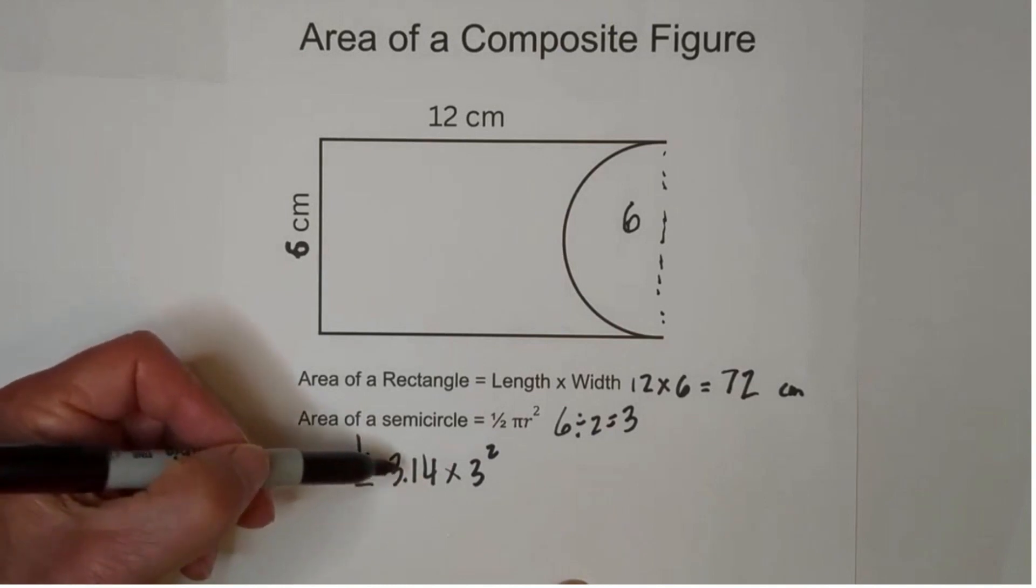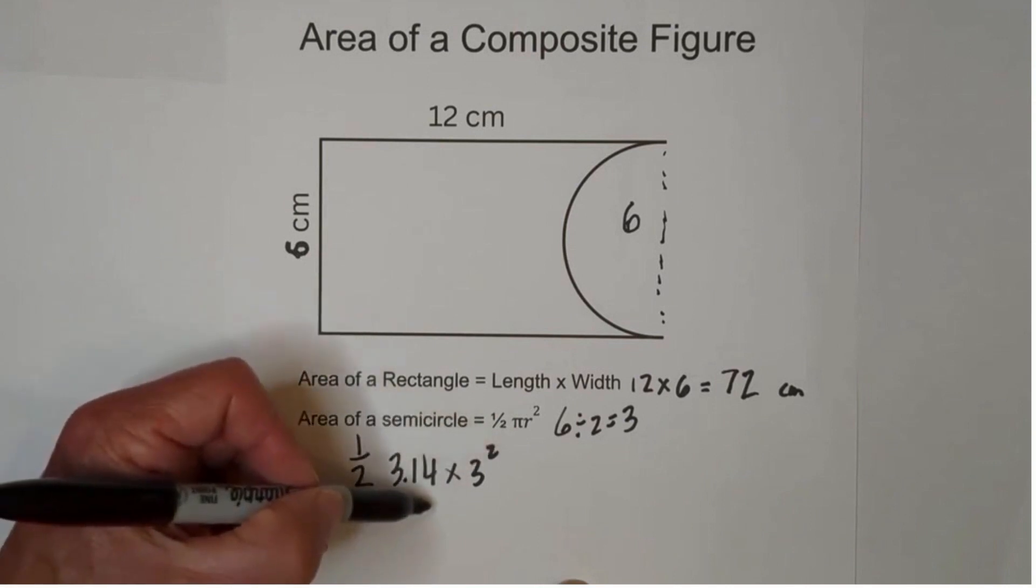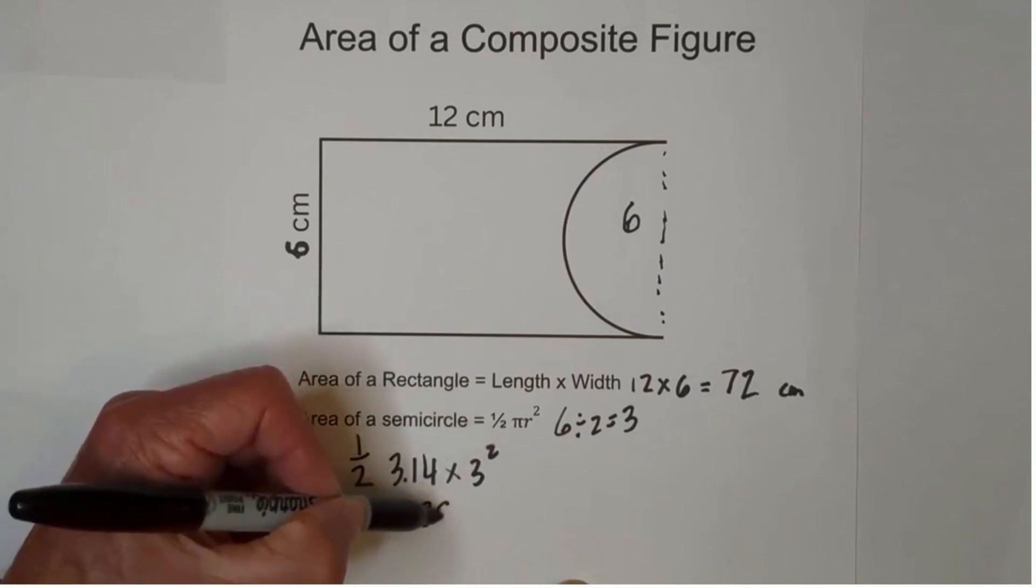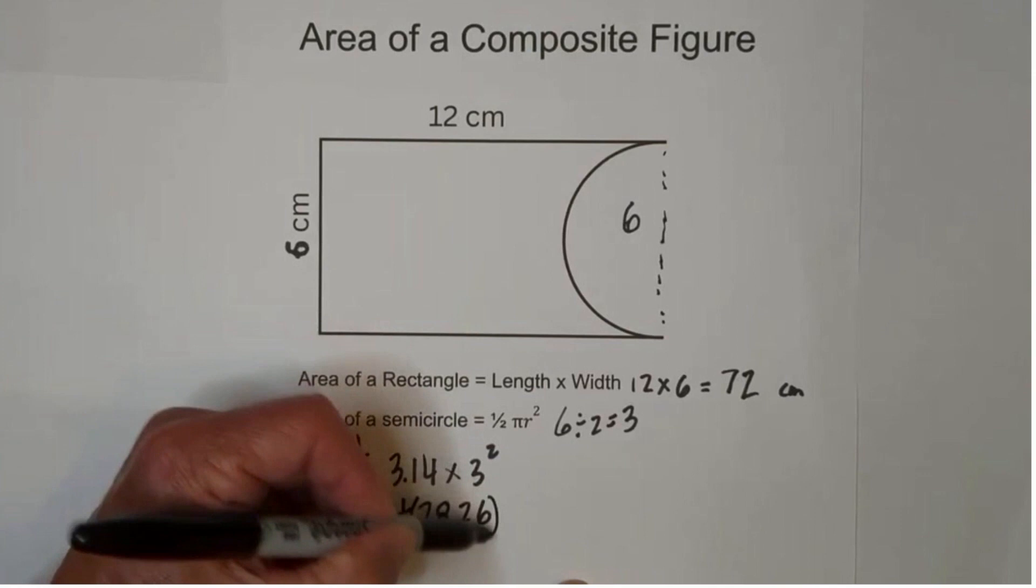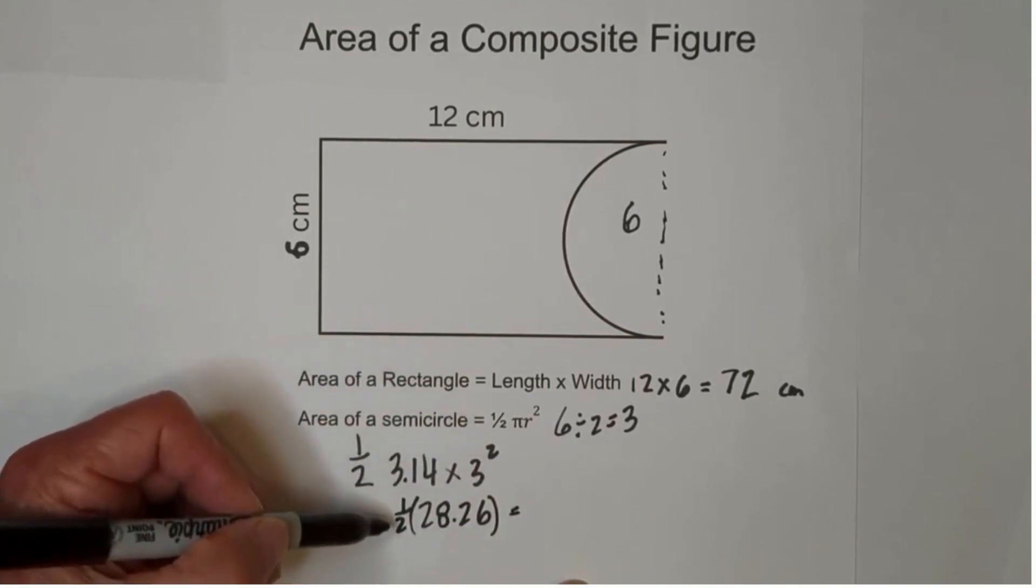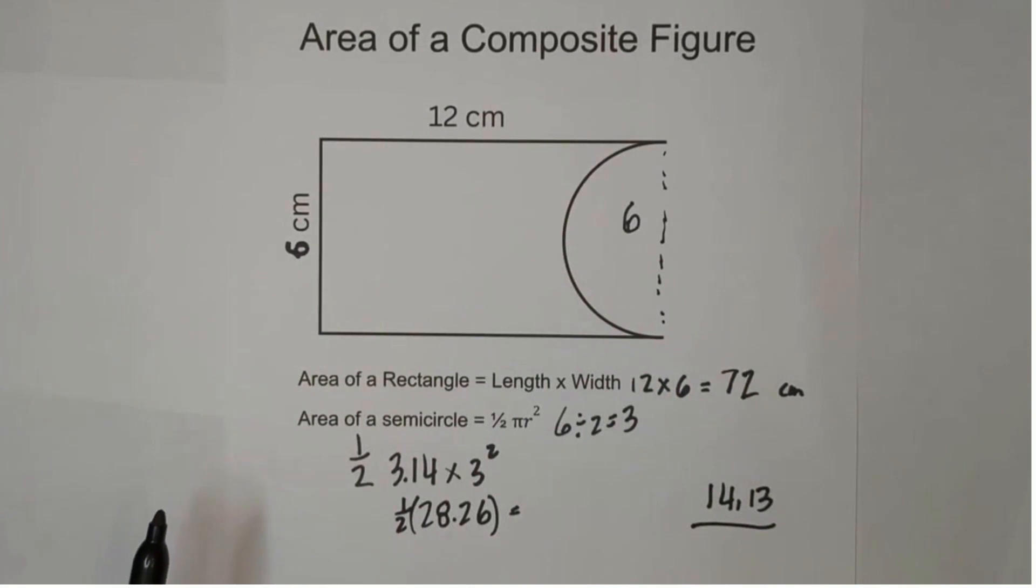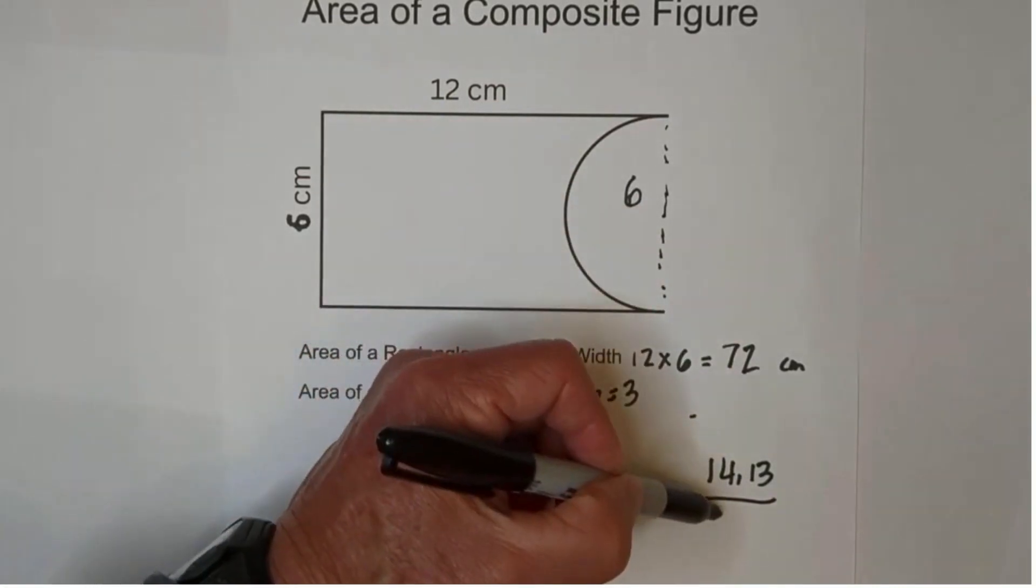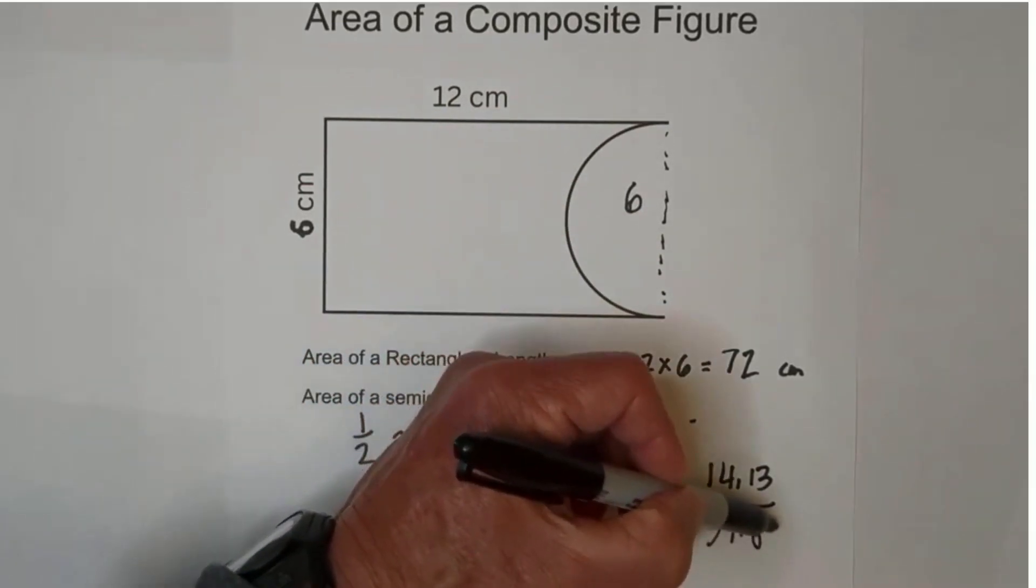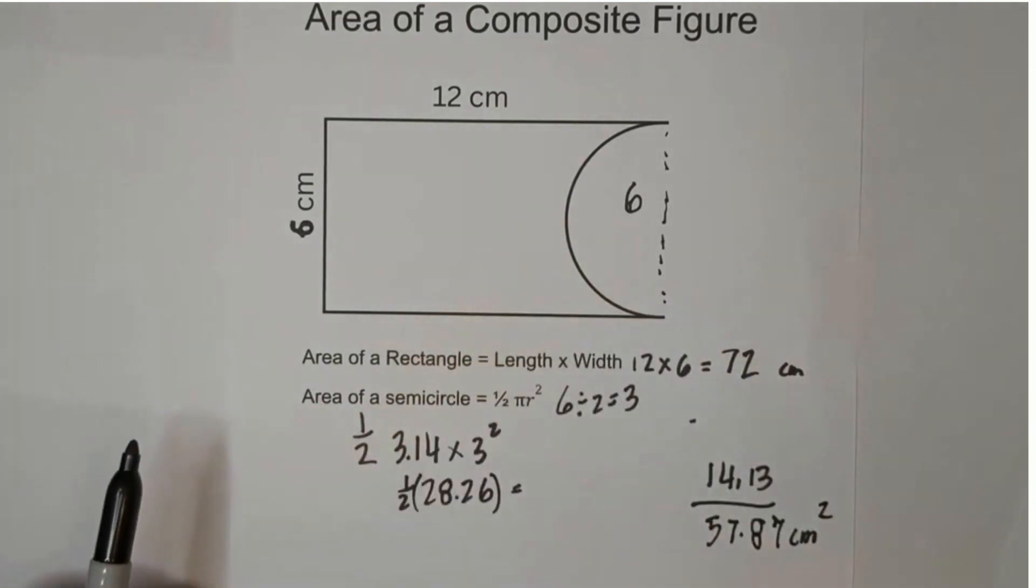When you multiply 3.14 times 3 squared, which is 9, you get 28.26. And remember we have to multiply this by 1/2. When we multiply 28.26 times 1/2, we get 14.13. So now all we do is subtract those. 72 minus 14.13 is 57.87 centimeters squared. Area is always squared.